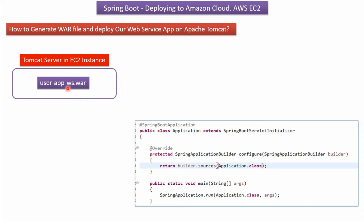In this video tutorial I will explain how to generate the WAR file and deploy the web service application on Tomcat server which is installed in an EC2 instance. Before generating the WAR file, we have to make some changes. The first change is the class application should extend SpringBootServletInitializer and it should override the configure method and return builder.sources.